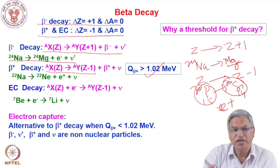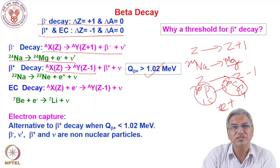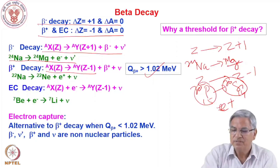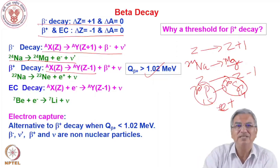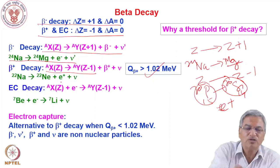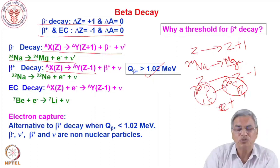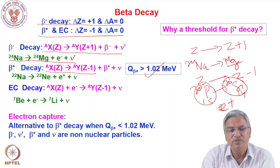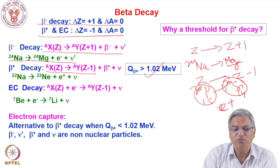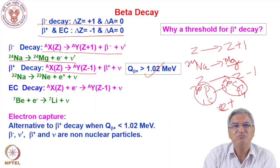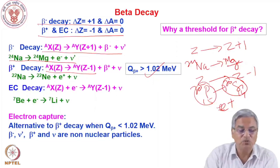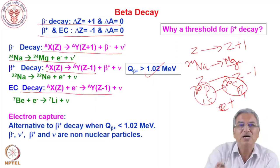I hope that is clear. In beta plus decay, since the atomic number has decreased, the positron is emitted, and the excess electron in silicon-30 would also be emitted. So the mass difference between parent and daughter must be greater than or equal to the rest mass of an electron-positron pair, 1.02 MeV. So beta plus decay is only possible when Q_beta is more than 1.02 MeV; otherwise, beta plus decay is not possible.